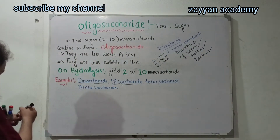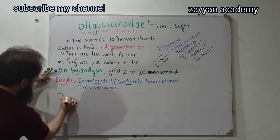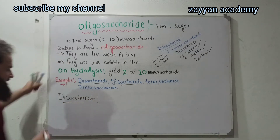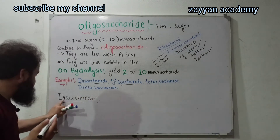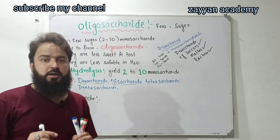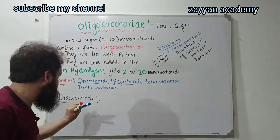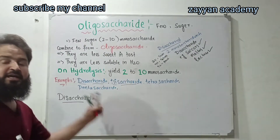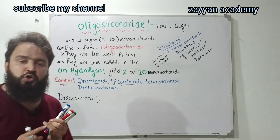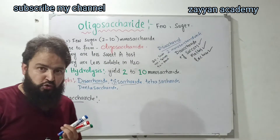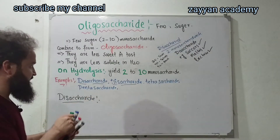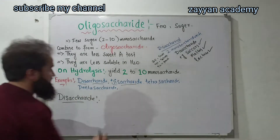We have discussed disaccharide. Di means 2, saccharide means sugar. We have two sugar molecules combined via glycosidic bond to form a large molecule — a disaccharide. Examples of disaccharide are: Lactose, Maltose, and Sucrose.